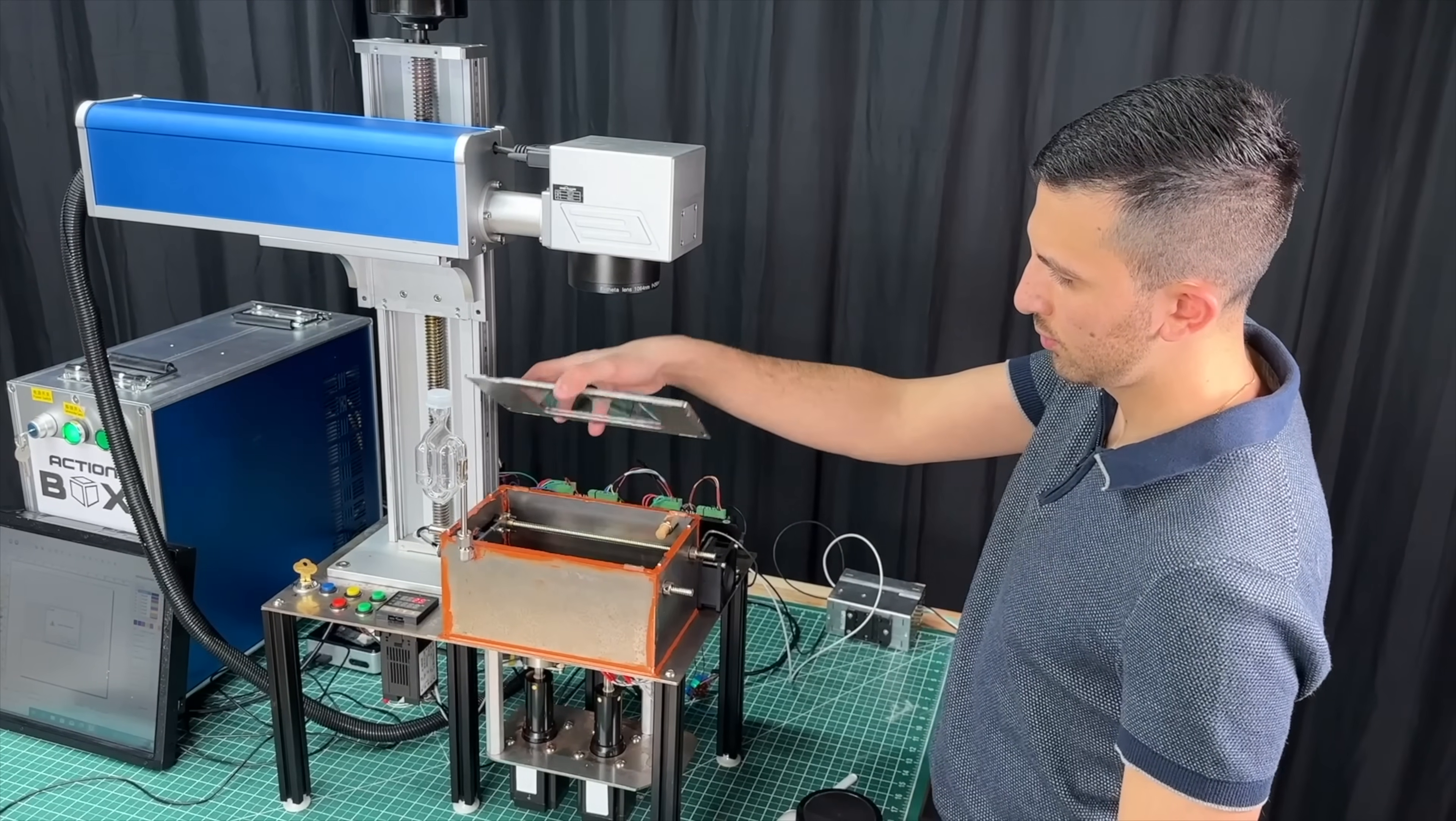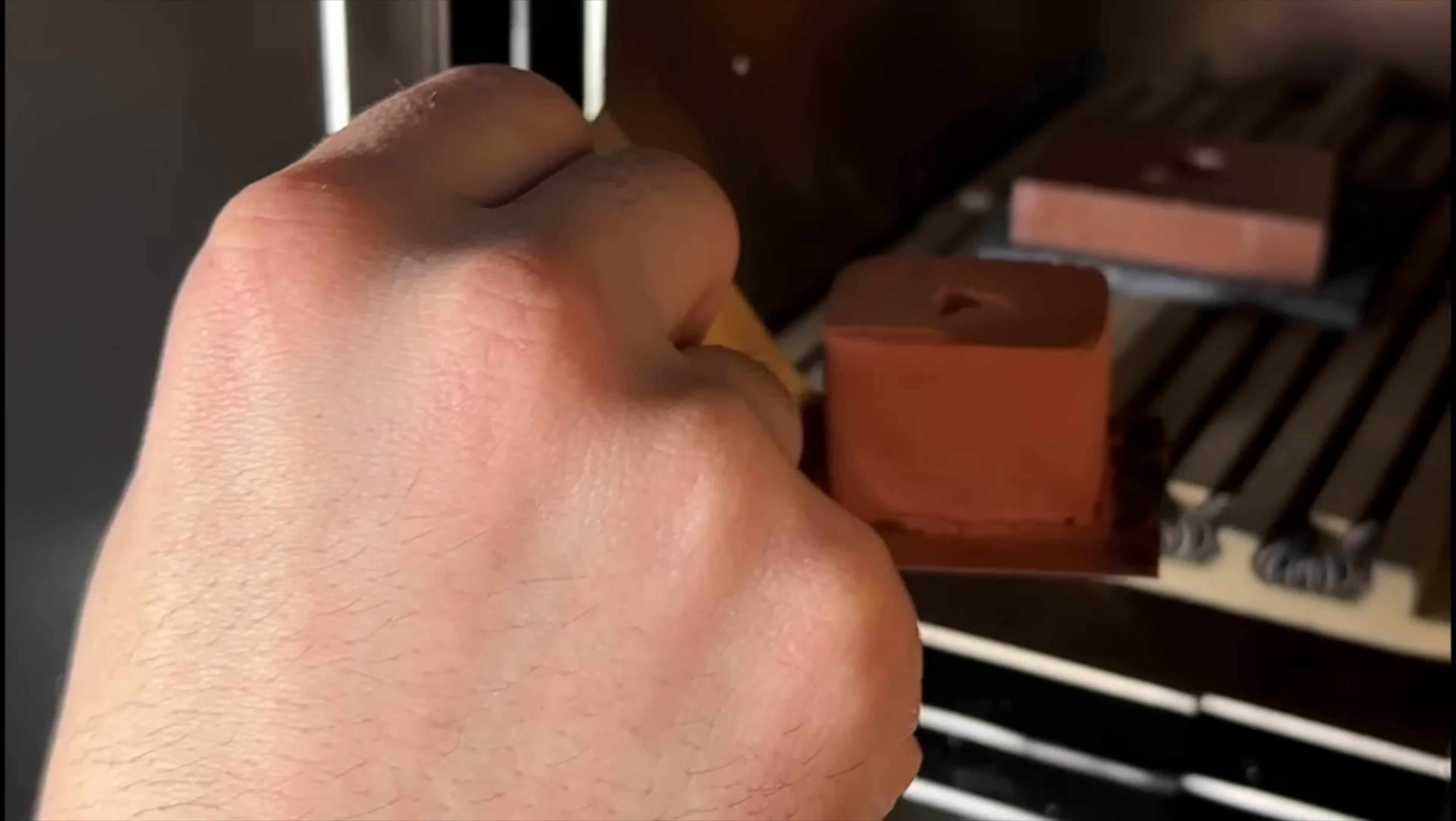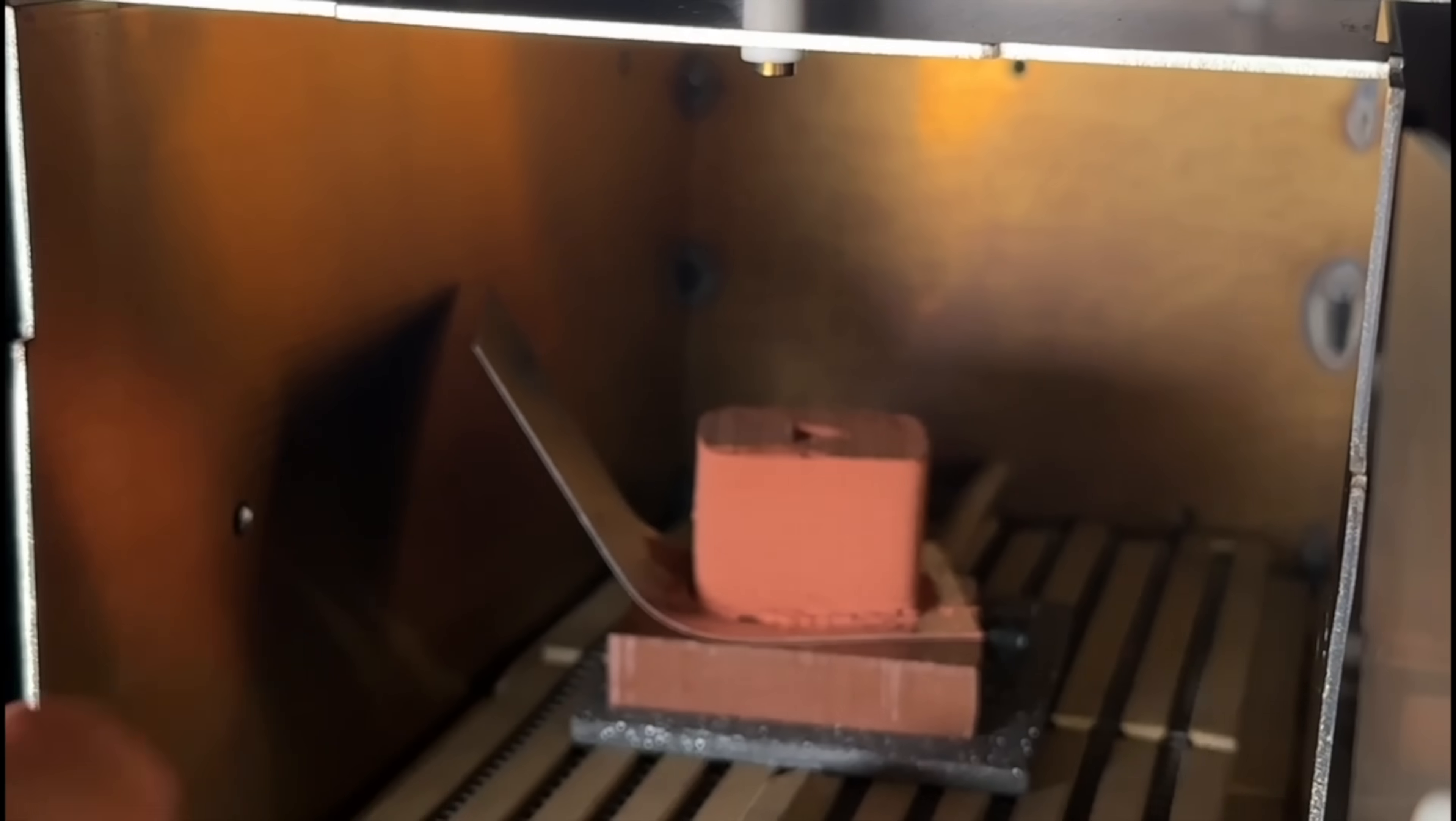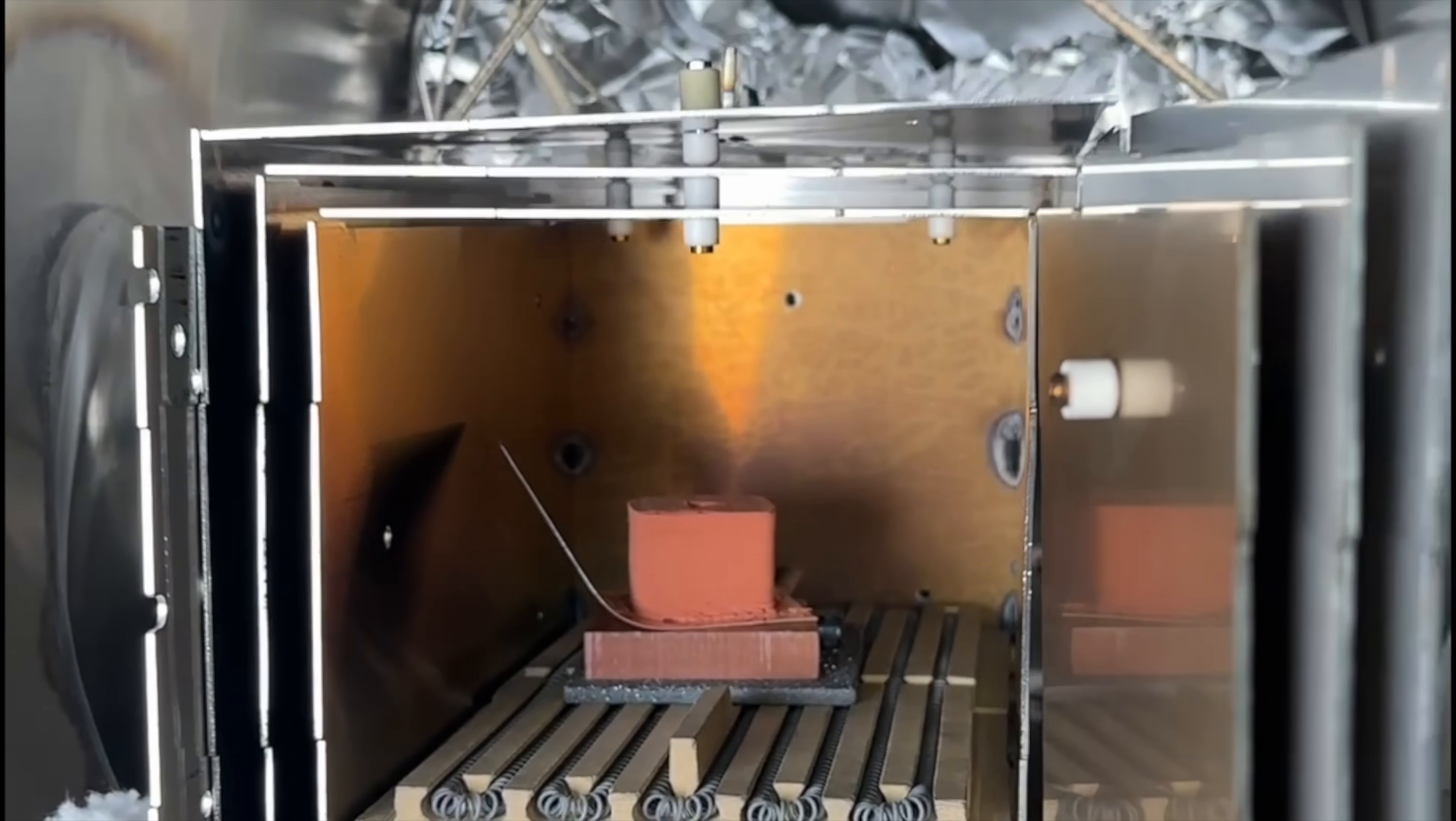But what does that mean? Well, after our DIY metal 3D printer makes our part, the copper particles, in this case, are loosely bound and require further sintering to become a single strong metal part, and I'll explain shortly why we need a high vacuum furnace.